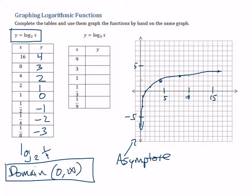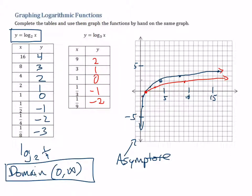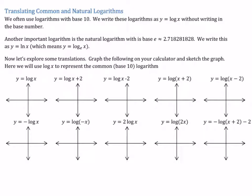Let's try log base 3. The power you put on 3 to get 9 is 2; to get 3 is 1; to get 1 is 0, and so on. Plotting those points — (9,2), (3,1), (1,0) — the curve is lower and closer to the x-axis than log base 2. They share the point (1,0). A larger base makes the graph closer to the x-axis, so log base 10 would be even lower.